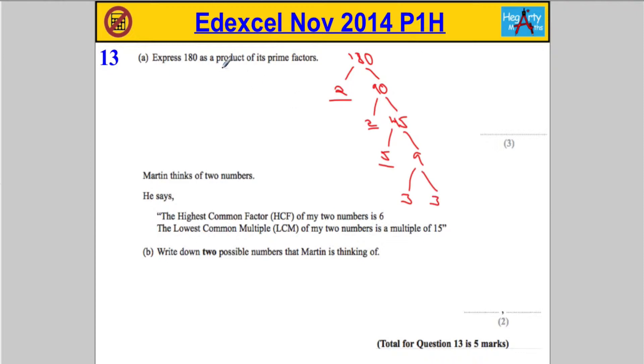Now, the important thing to remember here is it asks for a product of its prime numbers. So, it's 2 times 2 times 3 times 3 times 5. Product means multiplication. Don't put commas in here, we need multiplication symbols.